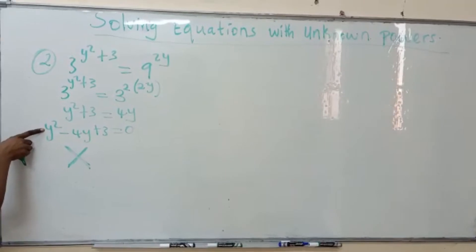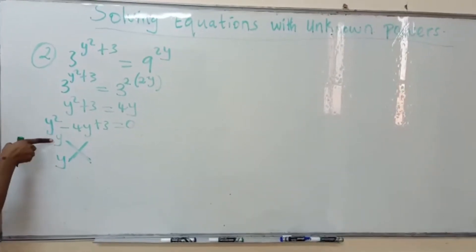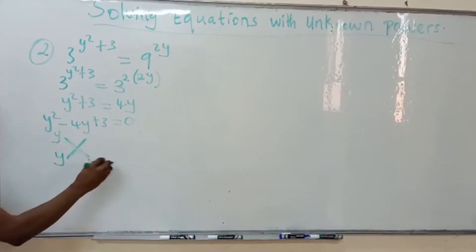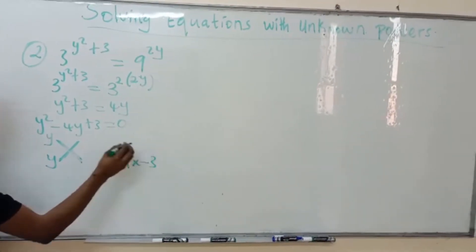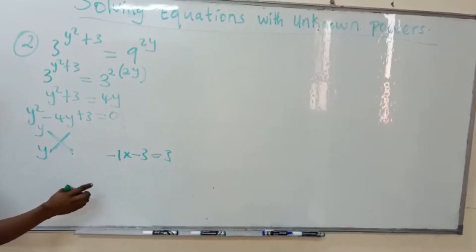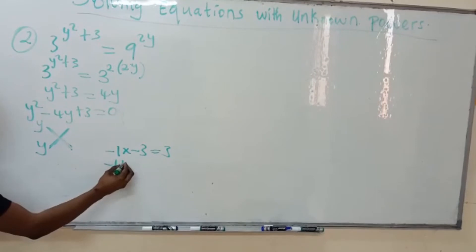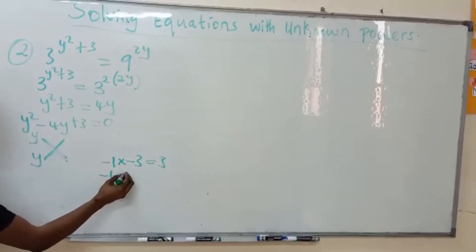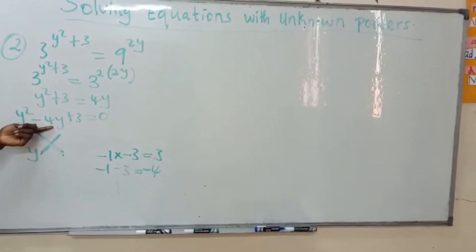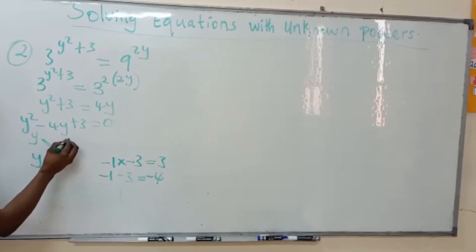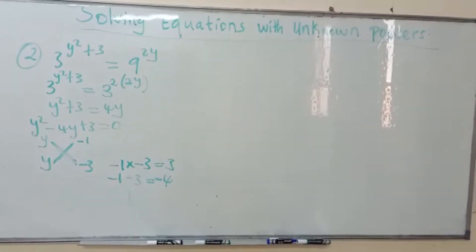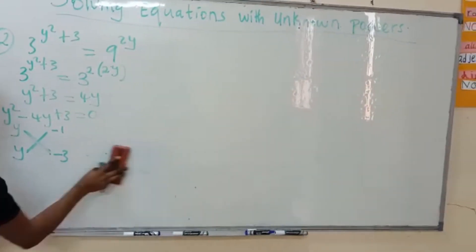We put y times y because y times y gives y squared. Then I know that minus 1 times minus 3 gives me 3, and minus 1 plus minus 3 gives me minus 4, which is the coefficient of y. So I'm going to have the factors as minus 1 and minus 3.